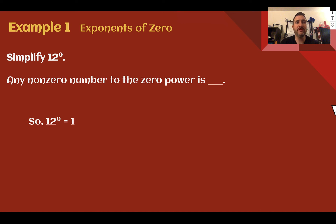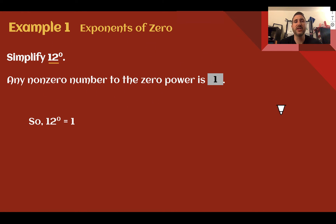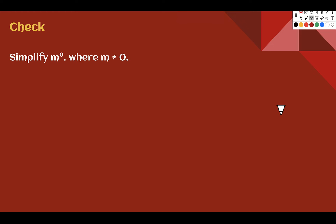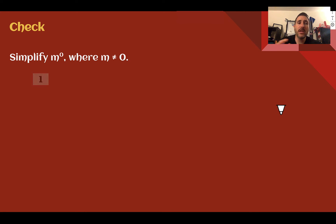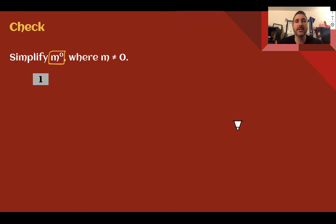Example 1 — exponents of 0. Simplify 12 to the 0. Any non-zero number to the 0 power is equal to 1. We have 12, that's not 0, so 12 to the 0 is equal to 1. Check your understanding: simplify m to the 0. m is not 0, so the answer is 1. Even if it's a variable, as long as we know that variable is not equal to 0, it's still equal to 1.